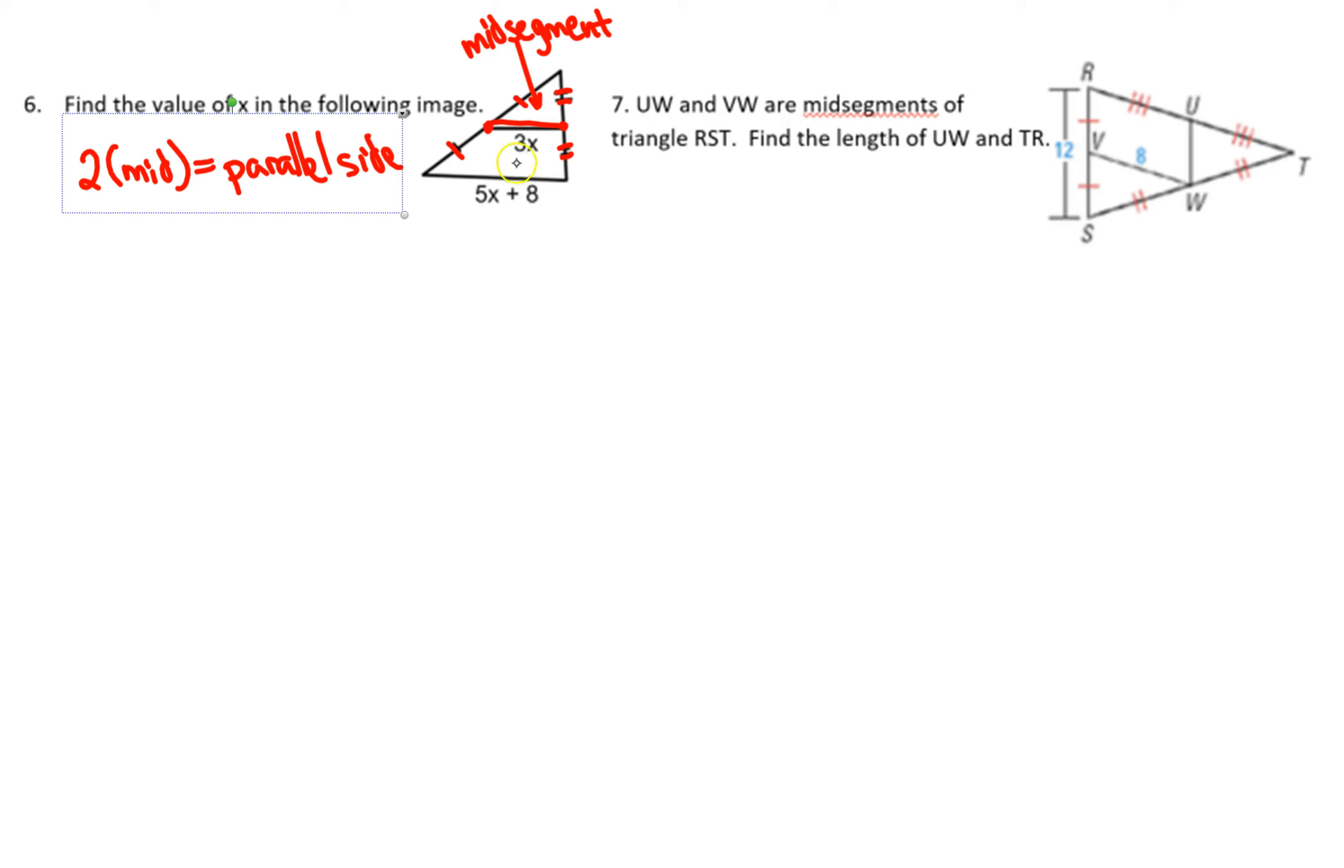We know that 3x is our mid-segment, and 5x plus 8 is the parallel side. So two times the mid-segment, which is 3x, equals its parallel side, 5x plus 8.